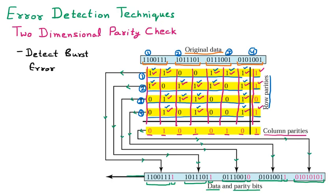This combined data with the 2D parity bits is sent to the receiver. At the receiver side, the data is cross-verified. If it matches, the receiver accepts the packet. If it does not match, the receiver can discard the packet or correct it using an error correction mechanism. That is all about the two-dimensional parity check.